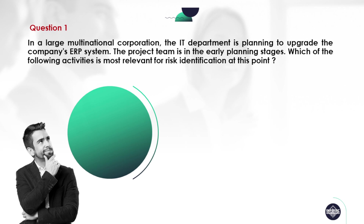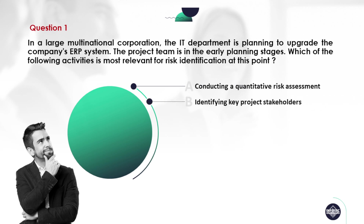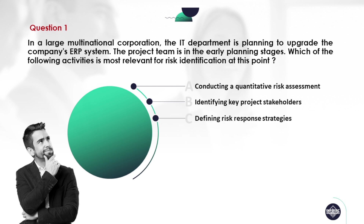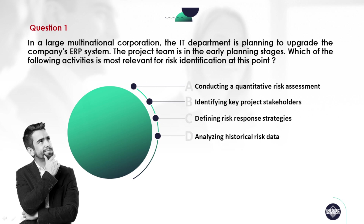Option A: conducting a quantitative risk assessment. Option B: identifying key project stakeholders. Option C: defining risk response strategies. Option D: analyzing historical risk data.